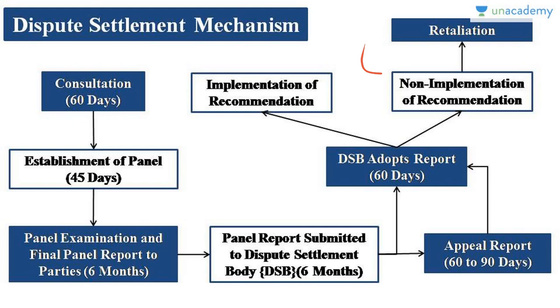If China decides not to implement the recommendation, the Dispute Settlement Body will authorize India to retaliate against China. India can stop all imports coming from China or raise the tariff on imports from China to a very high level. This provision for retaliation makes the body even stronger. This was not possible during the GATT era, but in WTO it is. The dispute settlement mechanism of WTO is quite robust and really helps developing countries.